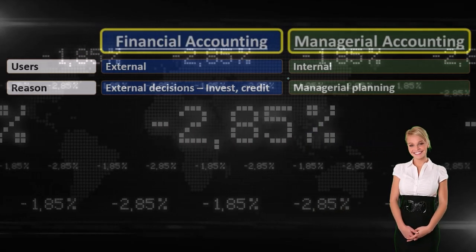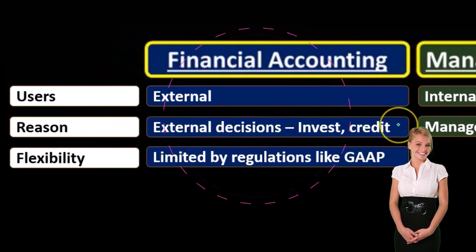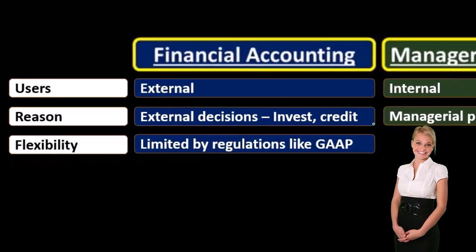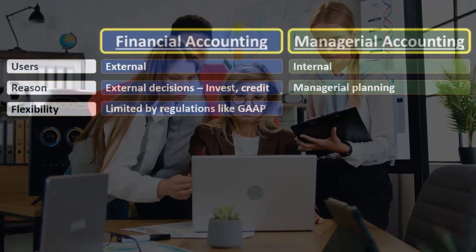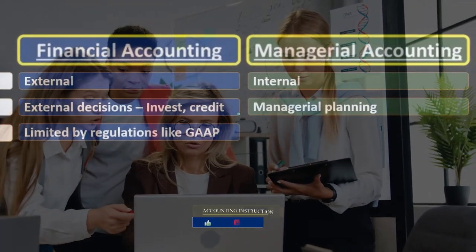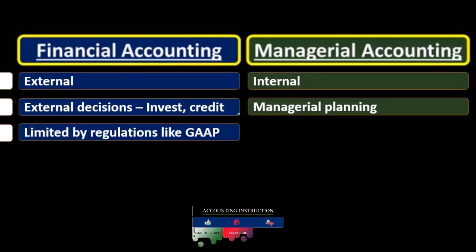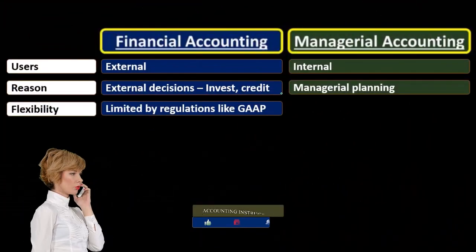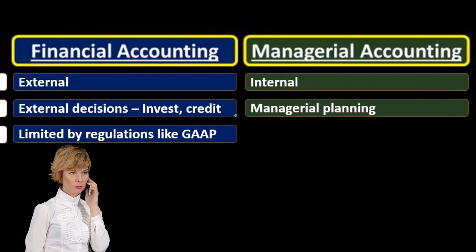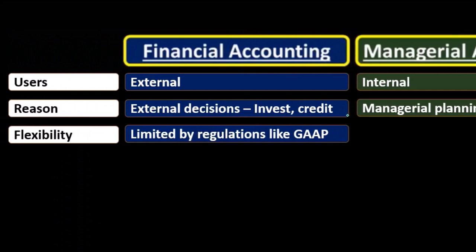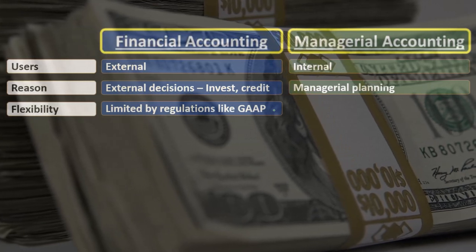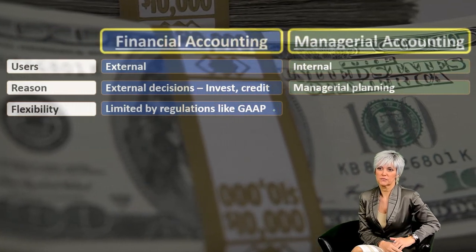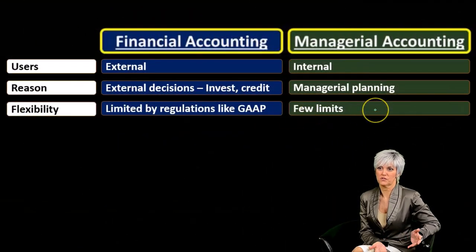Regarding flexibility: financial accounting is limited by regulations and generally accepted accounting principles (GAAP). The reasons for those limitations are that external users need standardization so they can compare one company's financials to another's. Financial accounting must be standardized to build trust with the public — so that investors can read the statements and compare them across companies.